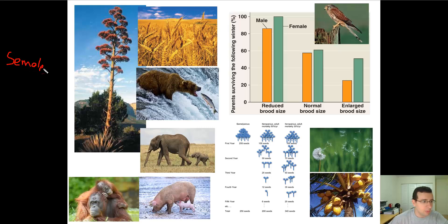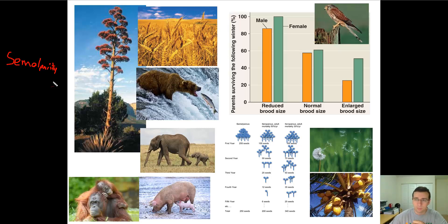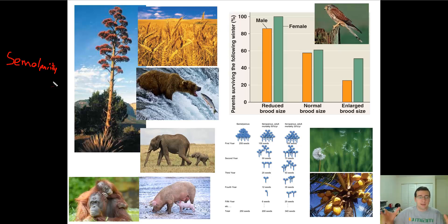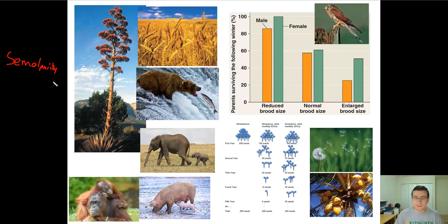Semelparity is, for example, when the salmon is going up the stream, up the river, and at the end of its life it has one chance of actually reproducing — laying out the eggs and doing what it needs to do. A lot of plants are also like that. They're what we call annual plants — plants that grow and have one event where they produce seeds and spread all over the environment, and after that they're dead. Some trees even spend a long, long life growing, and then at the very end there is one event where they plant all the seeds they can, and that's it.